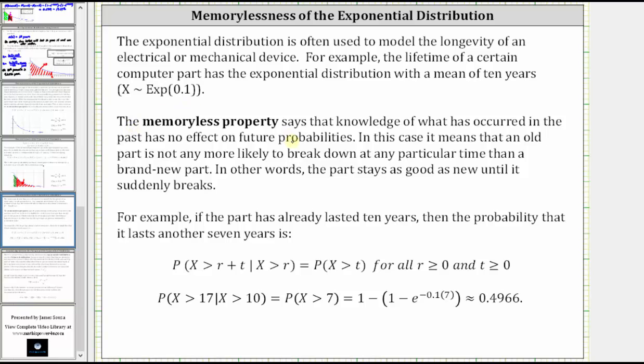The memoryless property says that knowledge of what has occurred in the past has no effect on future probabilities. In this case, it means that an old part is not more likely to break down at any particular time than a brand new part. In other words, the part remains as good as new until it suddenly breaks.